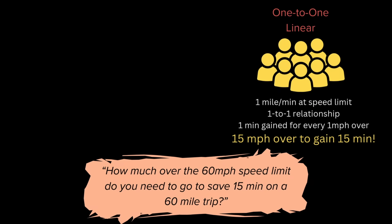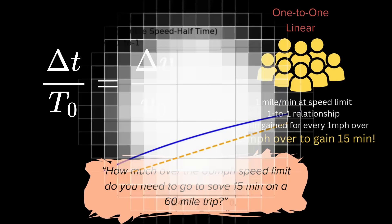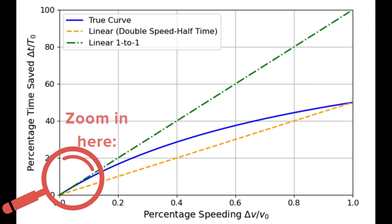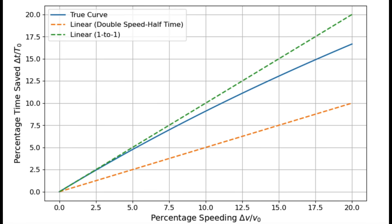And what about the folks who went for the linear one to one relationship? Delta t over t naught equals delta v over v naught. You folks tend to overestimate the benefits of speeding. But there is a sense in which you are right too, at least approximately. You see, when you speed only a little, relatively speaking of course, the two lines seem to match.